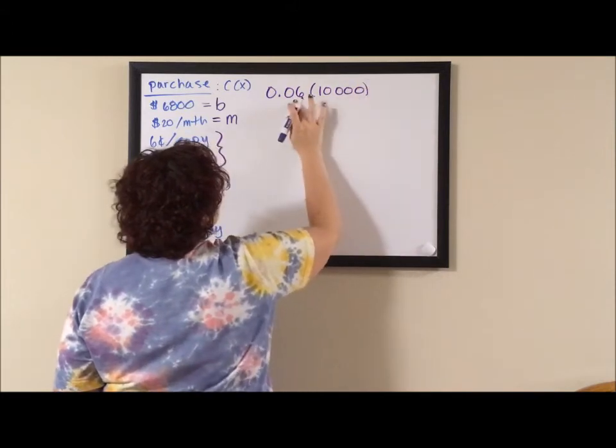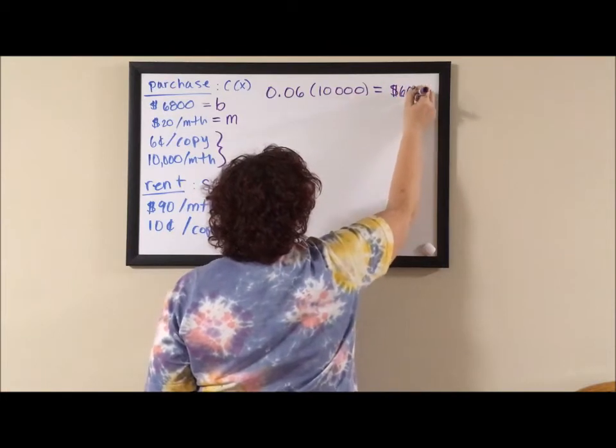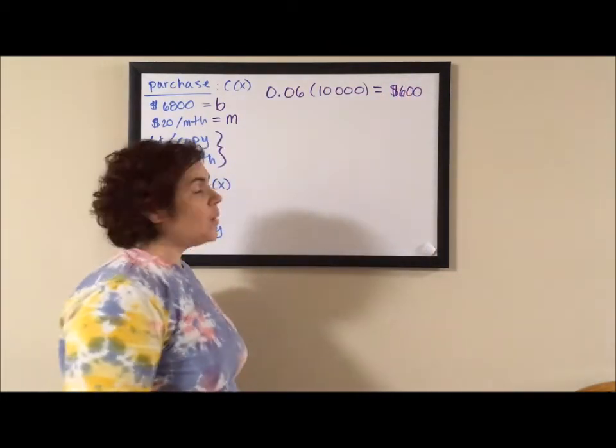Let's see, four zeros, one, two, three, four. That's going to be $600 a month for copies. I know that's a lot, but it's a lot of copies.